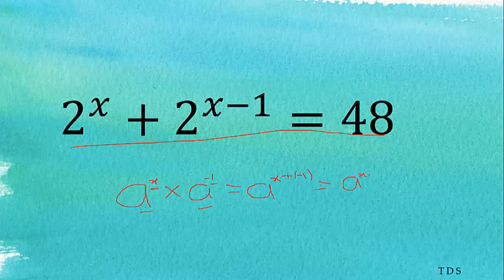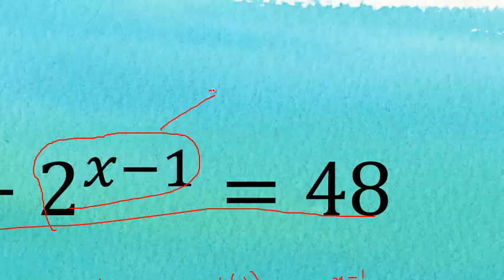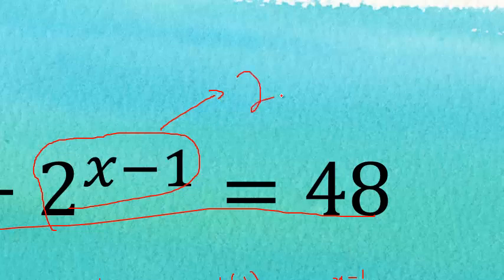We can apply this same property to our problem. We have 2 to the power x minus 1, which is the same as 2 to the power x times 2 to the power minus 1. If we understand this, then solving this equation becomes straightforward.